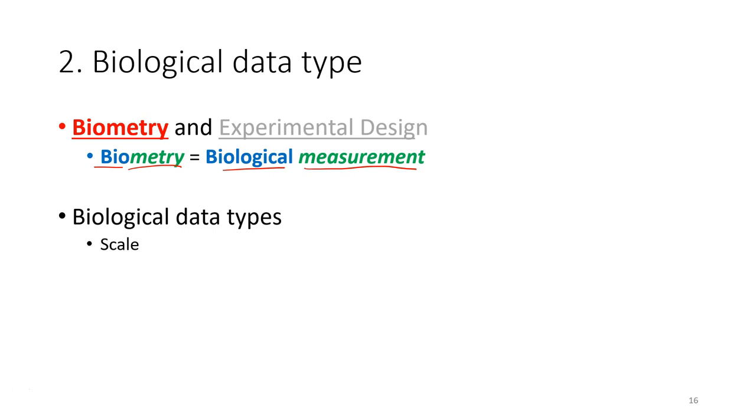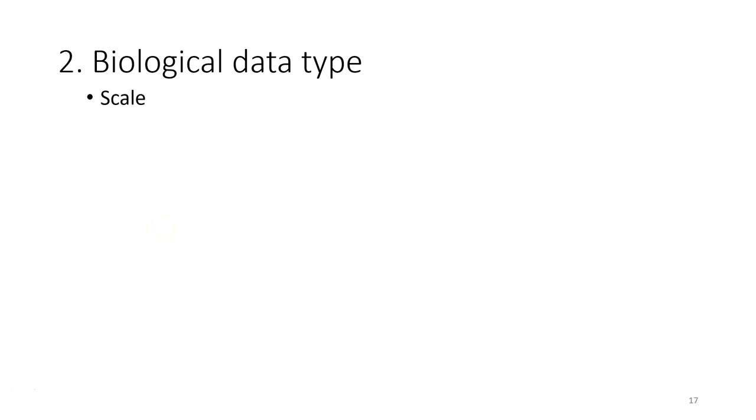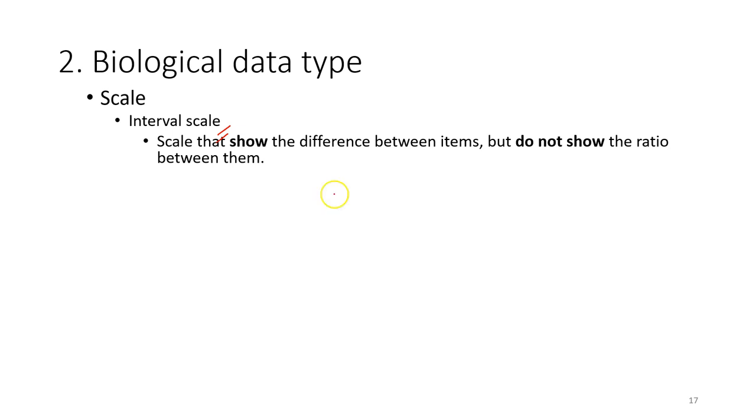First is the scale, ordinal data, and also nominal data. For scale data, we can divide into two types. First is the interval scale. The interval scale is the scale that shows the difference between items but does not show the ratio between them.